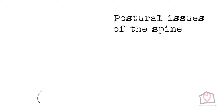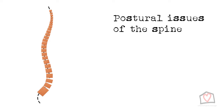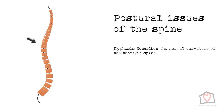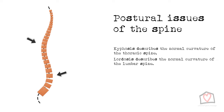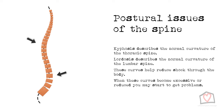Let's now move on to the postural issues of the spine. First we need to define a couple of terms. Kyphosis is the term used to describe the normal curvature of the thoracic spine. You may also hear the term kyphotic curve. This is an outward curve. The other term is lordosis, or lordotic curve. This is the normal curvature of the lumbar spine, and this is an inward curve of the spine. These curves in the spine are important as they help reduce the shock through the body. When these curves become excessive or even reduced, you may then start to get problems. These changes in curvature are a form of dysfunction.